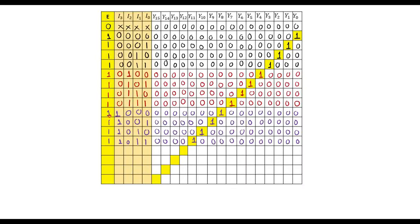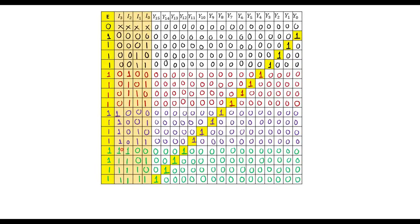If enable is 1 and I3=1, I2=0, decoder C is selected. If I1=0, I0=0, Y8 is high; if 0,1 then Y9; if 1,0 then Y10; and if 1,1 then Y11 is high. Finally, if I3=1 and I2=1, decoder D is selected: I1=0, I0=0 selects Y12; 0,1 selects Y13; 1,0 selects Y14; and 1,1 selects Y15.